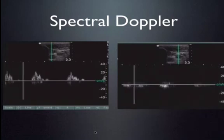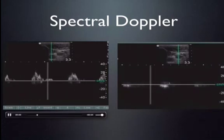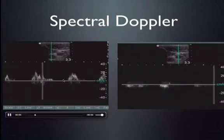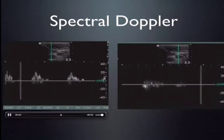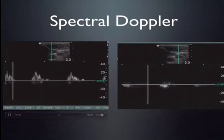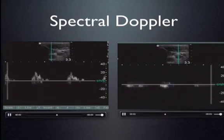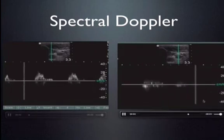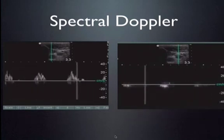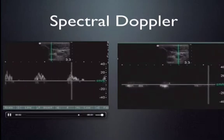Now, in this case, there is no assignment of a color scale. So we can still tell direction of flow because above the baseline here is towards the probe, whereas below the baseline is away from the probe. Additionally, we have a velocity scale applied to either side of your spectral Doppler images here, and therefore you can get an estimate of blood flow velocity.